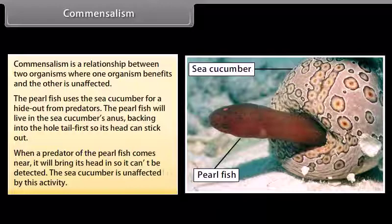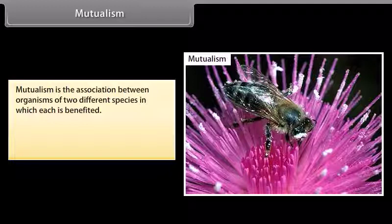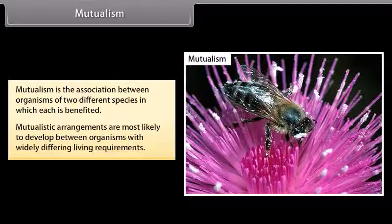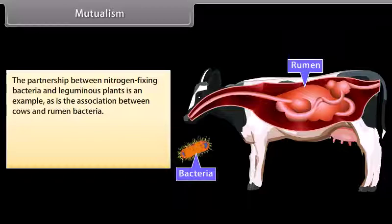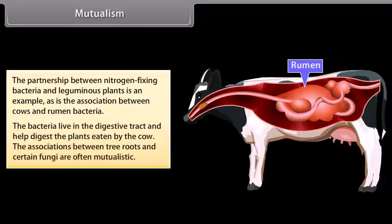Mutualism is the association between organisms of two different species in which each is benefited. Mutualistic arrangements are most likely to develop between organisms with widely differing living requirements. The partnership between nitrogen-fixing bacteria and leguminous plants is an example, as is the association between cows and rumen bacteria — the bacteria live in the digestive tract and help digest the plants eaten by the cow. The associations between tree roots and certain fungi are often mutualistic.